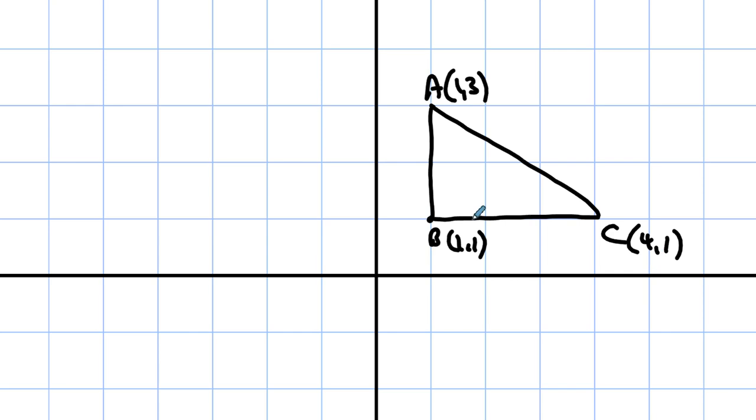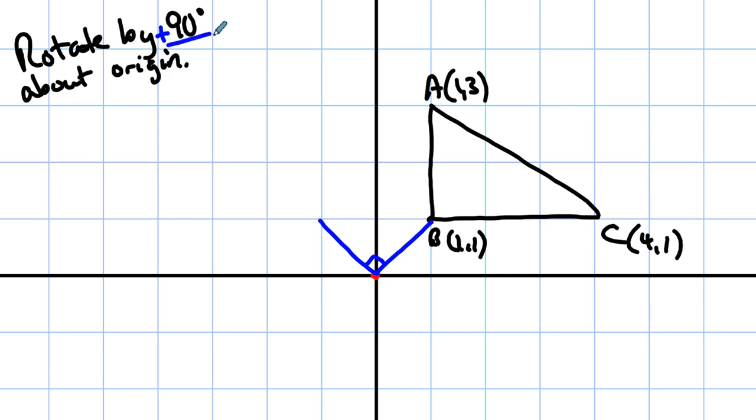We're going to take this triangle and rotate it by 90 degrees about the origin. Well, what does that mean? The origin becomes the center of rotation. For each of the vertices of our triangle, we're going to connect to the origin. And then on a 90 degree angle, we're going to come out from the origin, 90 degrees, counterclockwise.